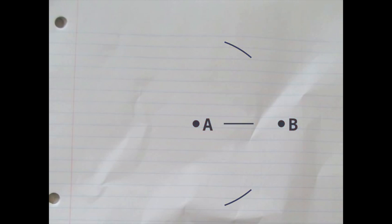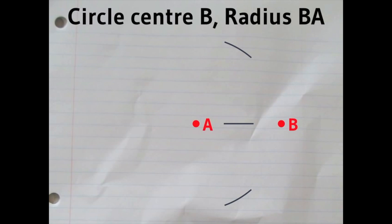The third step, still with the compass, you draw a circle with center B and the same radius AB. Just those two parts of the circle will do.